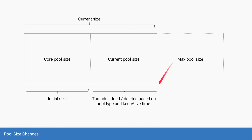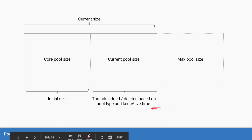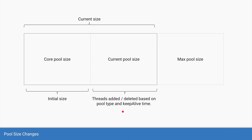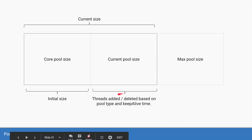The keep alive time is the time for which, if a thread remains idle and there are no other tasks, the thread pool can kill those threads. So instead of expanding, the thread pool can contract or shrink — threads can slowly be removed from the thread pool. The pool size will slowly shrink down to the core pool size and will never go below it.